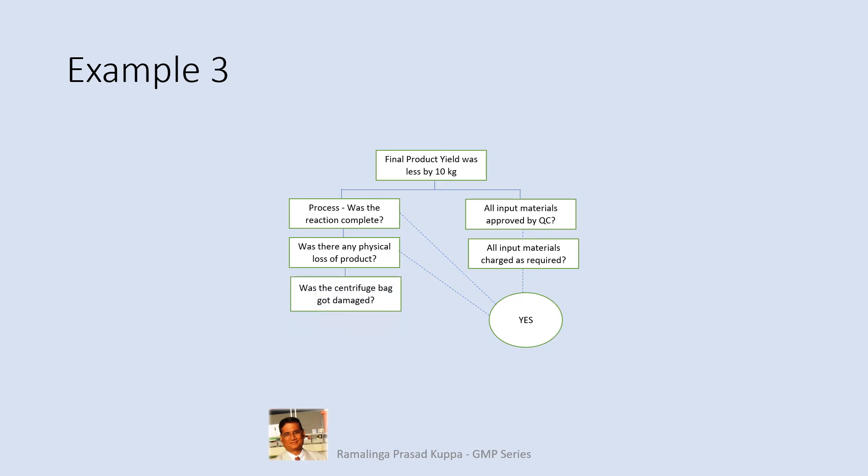Since it was a physical loss, the centrifuge bag and its filter bag should be part of the investigation for potential causes. Check if there were damages to the bag. If there were damages, the investigation should further subdivide into the frequency of replacing the centrifuge bag to avoid recurrences. If the material had passed out into the mother liquor or filtrate, the filtrate should be part of the investigation — it may be evaluated for the presence of product. Product mass balance may be established, checking whether the material present in the filtrate accounts for the lost 10 kilos.